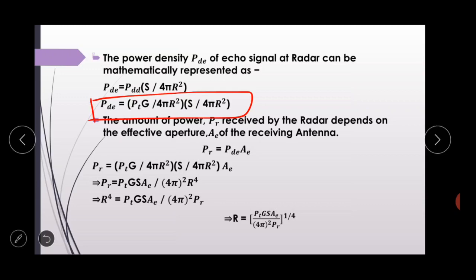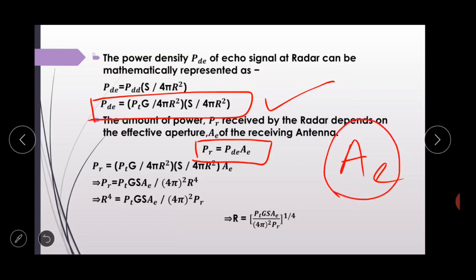Solving the received power equation PR = (PTG × S × AE) / (4πR²)² gives us the standard radar range equation. To find maximum radar range, we substitute R with Rmax and PR with PRmin — यानी minimum received power। Radar range maximum कब होता है? जब received power, minimum detectable power के equal होता है। This substitution gives us the standard radar range equation for Rmax.